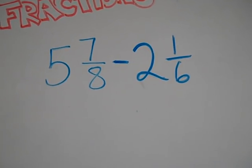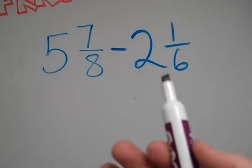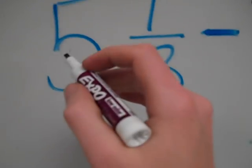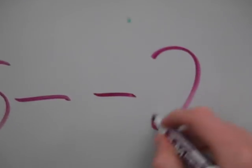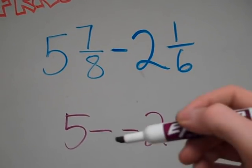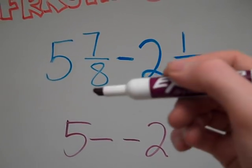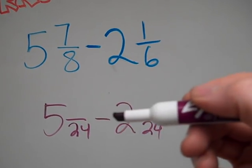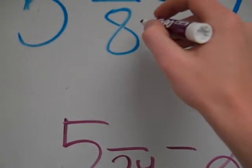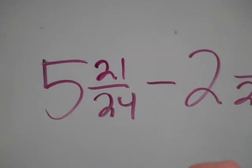So in my first example, I have 5 and 7 eighths minus 2 and 1 sixth. Just like any adding or subtracting fractions problem, you want to look at your denominators first to see if they're common. These aren't common, so I'll make them common. Going through multiples of 8: 8, 16, 24 — yes, 24 will work for both. So I'm making these into 24ths. 8 times 3 is 24, so I do my numerator times 3: 7 times 3 is 21.